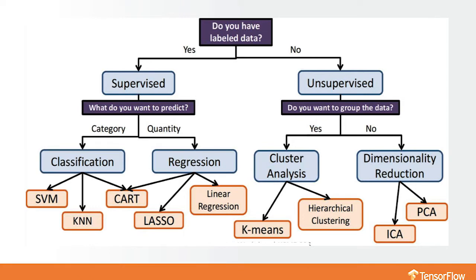Traditional machine learning has two branches: supervised learning and unsupervised learning. Unsupervised includes things like clustering, where you don't necessarily know the answers before you go into the problem — you're just trying to find relationships between data. With supervised learning, you know what you're looking for. Based on historic data and specific characteristics, you can predict: probably a Republican, probably a Democrat, or probably a cat versus a dog.